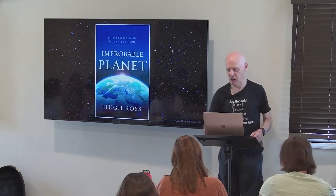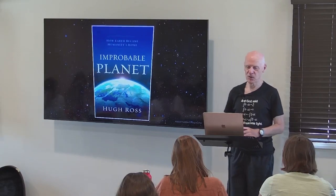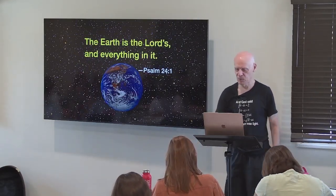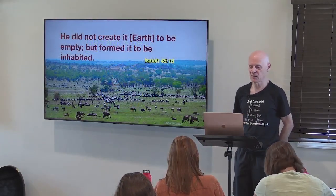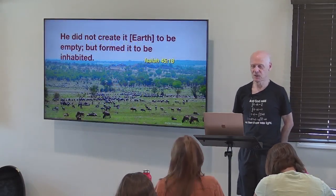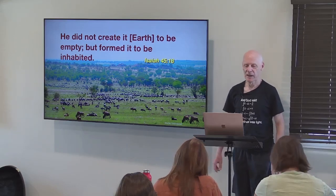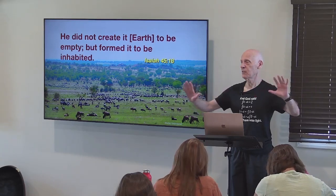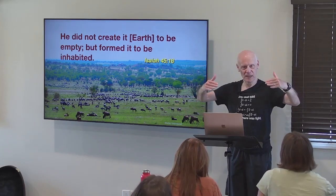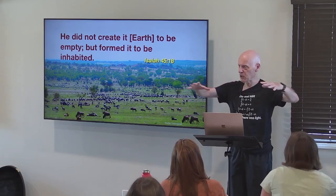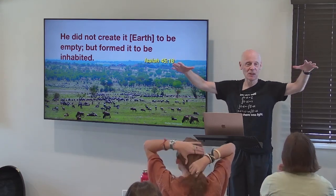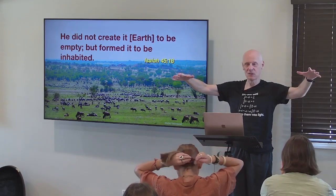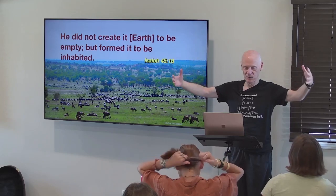Let me begin with a Bible verse: 'The earth is the Lord's and everything in it.' Concerning the earth, Isaiah says God did not create it to be empty, but formed it to be inhabited. There were more species of life when God created Adam and Eve than at any previous time in history. When God created Adam and Eve, the number of species on planet earth was at the theoretical maximum — about 8.5 million eukaryotic species and maybe 10 million prokaryotic species.